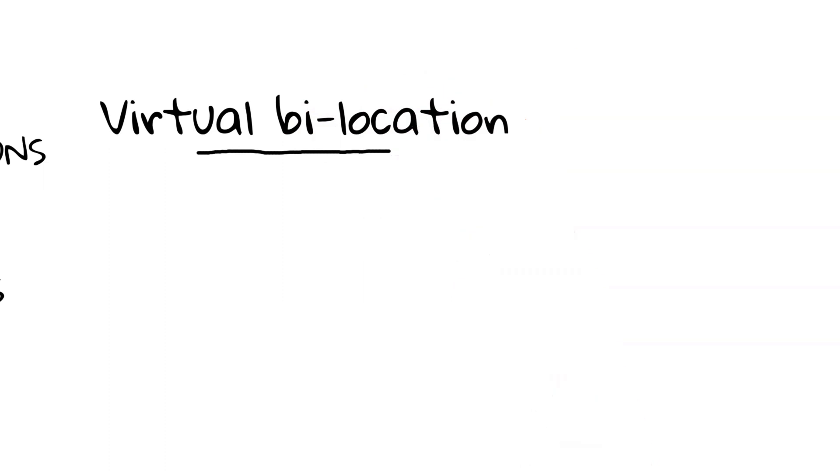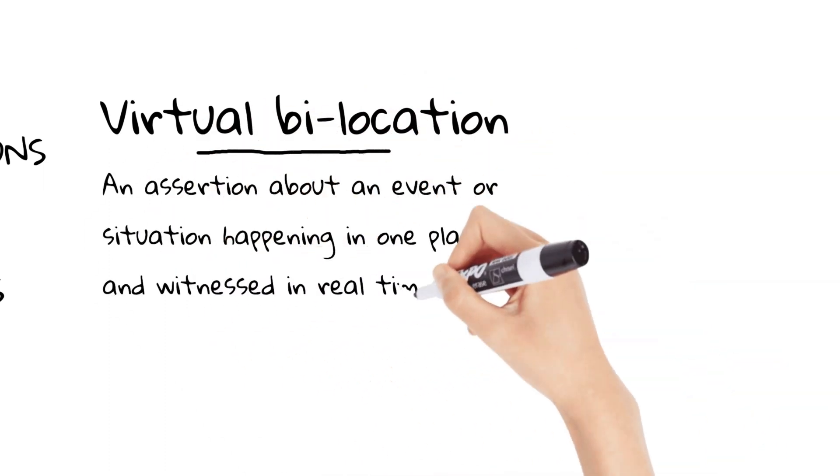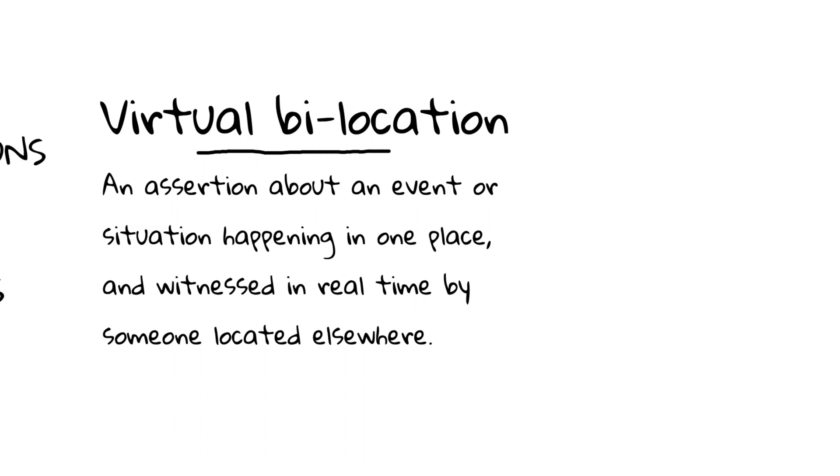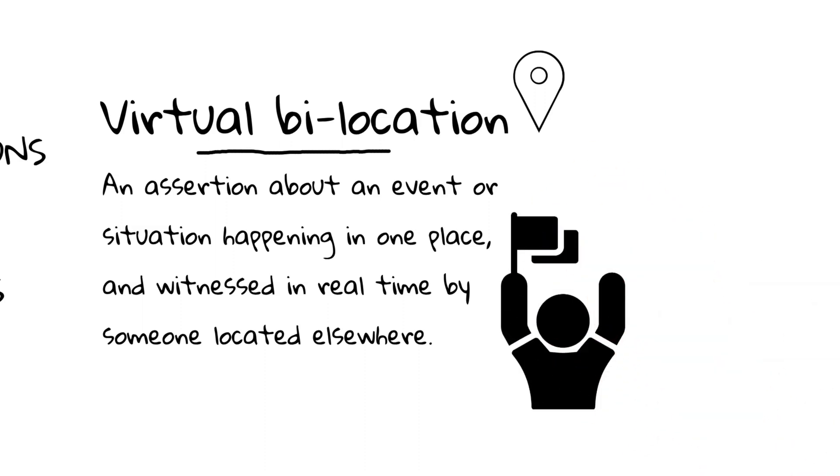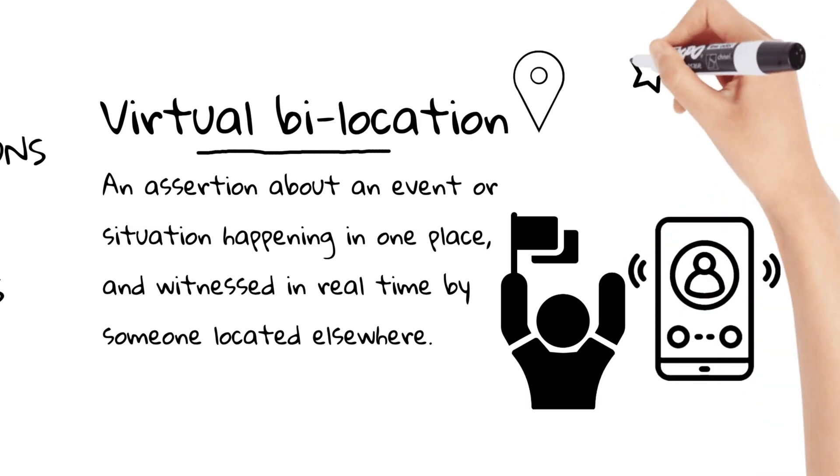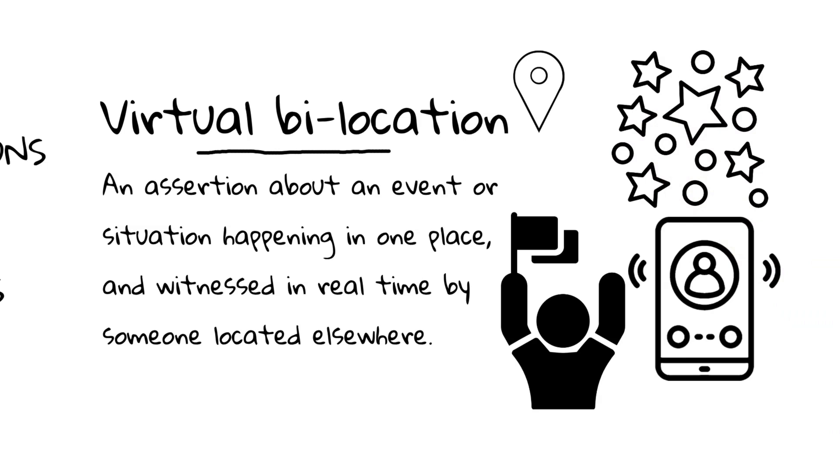Virtual bilocation refers to an assertion about an event or situation that is happening in one place, and is being witnessed by someone who communicates what is happening in real time to someone else. The receiver of this communication accepts the assertion as true and mentally appropriates it, making them virtually located in that place and virtually experiencing the same event. For example, imagine a live sports match. Person A is present at the stadium and witnesses a thrilling goal being scored. They immediately call person B and enthusiastically describe the goal as it happens. Person B, who is not physically at the stadium, accepts the assertion as true, and imagines themselves being virtually located at the stadium, experiencing the excitement of the goal, despite not actually being there.